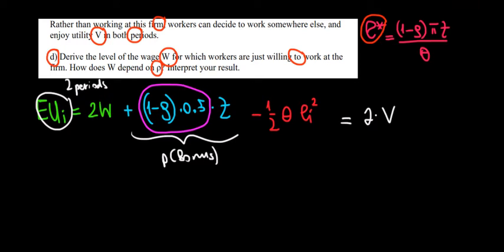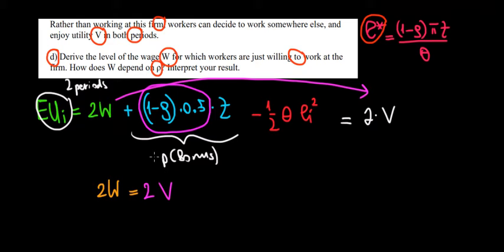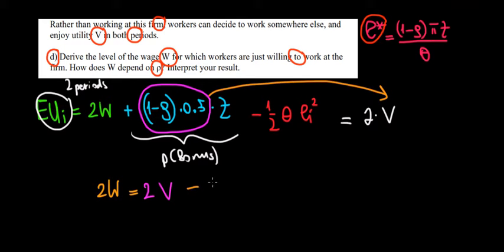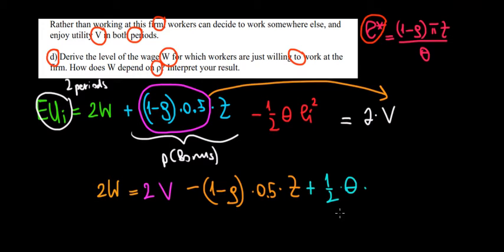What do we want? We want W — the fixed wage at this company that will attract the worker. To solve for W, let's take all these terms to the other side. We're left with two W's on one side, and on the other side we have two times V minus 1 minus rho times 0.5 times Z, plus 1 over 2 plus 1 over 2 times theta times the effort squared.